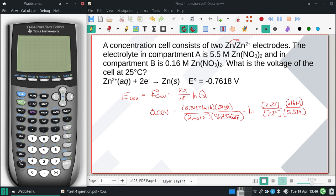So in our calculator, we have the natural log of 0.16... 0.16, I dropped my decimal... 0.16 divided by 5.5.